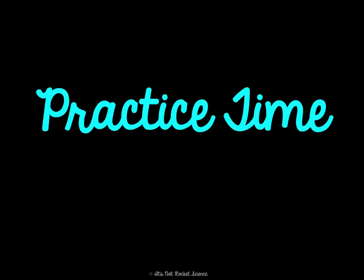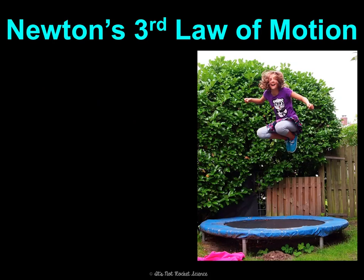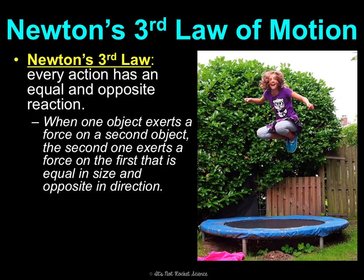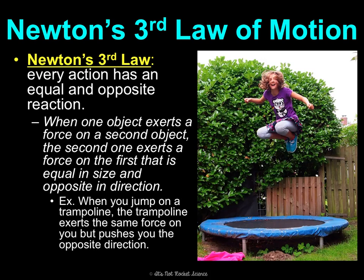Newton's third law of motion says that every action has an equal and opposite reaction. When one object exerts a force on a second object, the second one exerts a force back on the first that is equal in size and opposite in direction. For example, when you jump on a trampoline, the trampoline exerts the same force on you that you're exerting on it with your weight, but pushing you in the opposite direction.